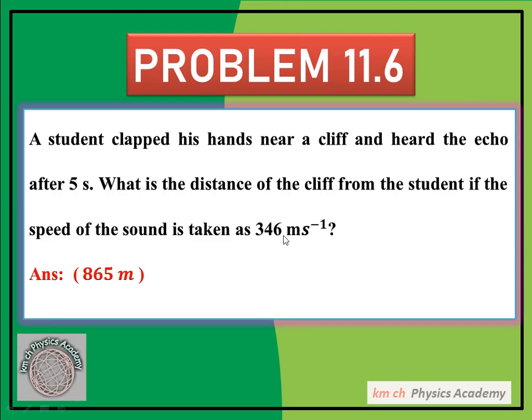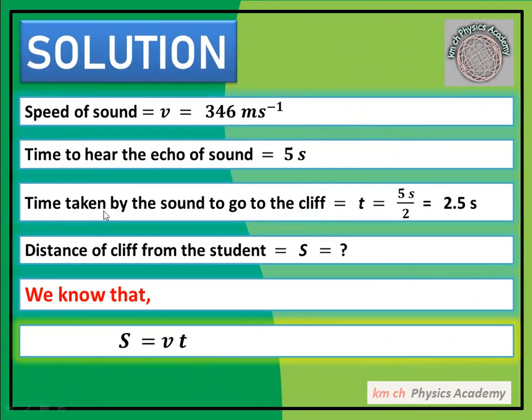Speed is given and distance we have to find, so using the formula s = vt, we can solve this. Speed of sound v is given as 346 meter per second. Time to hear the echo of sound is 5 seconds. Time taken by the sound to go to the cliff: it will take half the time going and half coming, so t = 5 seconds over 2 = 2.5 seconds.